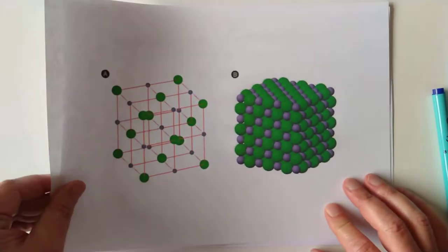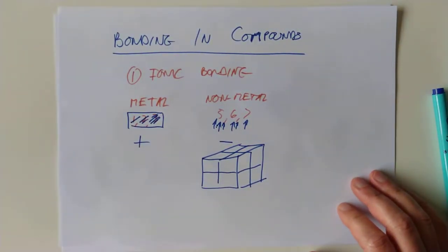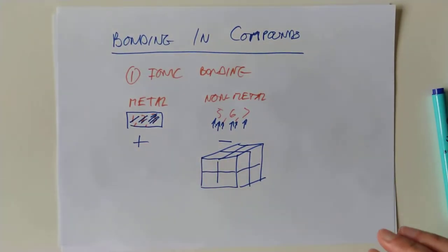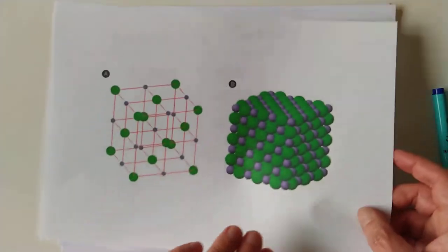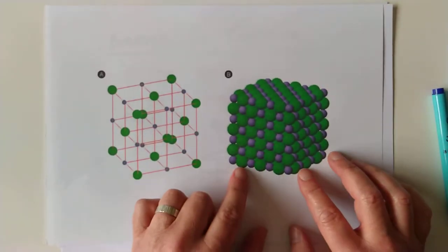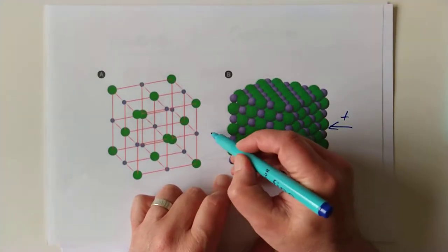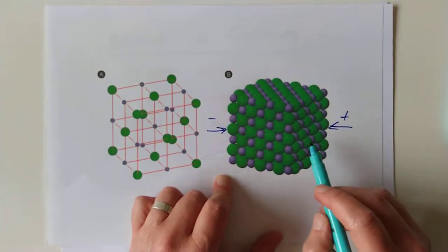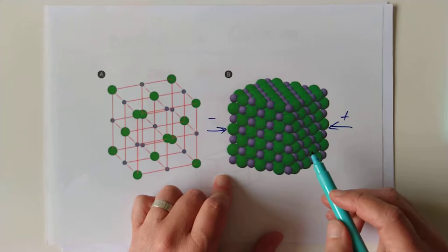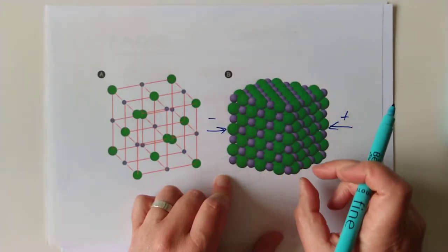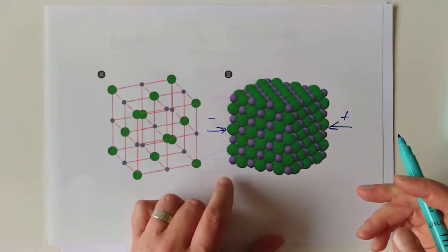My point being that the thing that holds these ions together to the neighbor is electrostatic attraction. One's positive, one's negative. When you take an ionic compound like this and try to apply voltage to it, if you apply a positive potential here and a negative side here, the ions do want to move, but they can't because they're all locked together at the moment. They're all jammed to the neighbor by very strong electrostatic attraction and they can't move around.